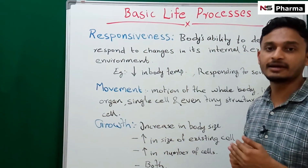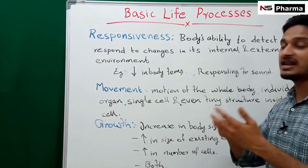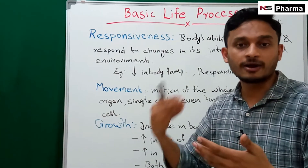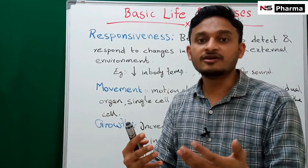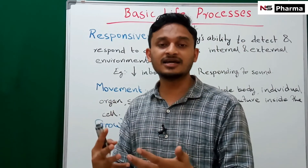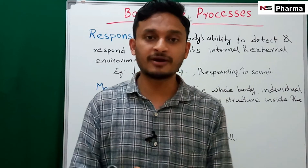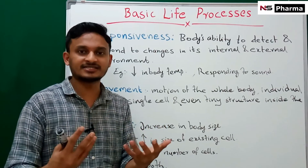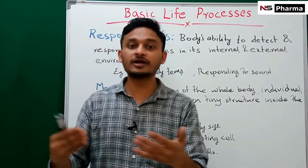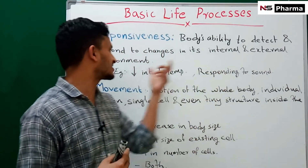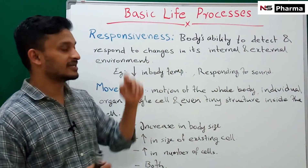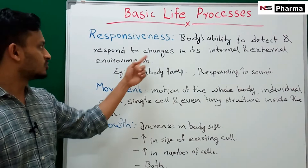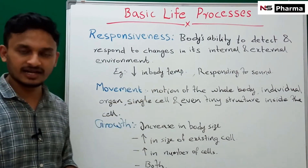An example of an internal environment change is a decrease in body temperature. An example of external environment responsiveness is responding to a sound — if someone calls from behind, the person turns to look back, detecting and responding to that external stimulus.